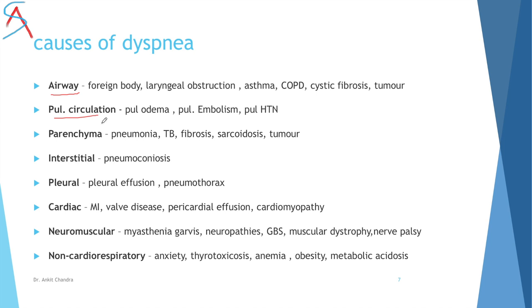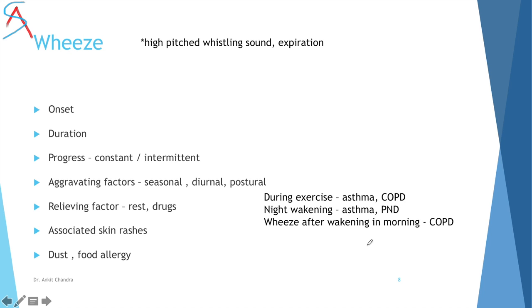Causes of dyspnea include airway causes such as obstruction and COPD; pulmonary circulation causes like pulmonary embolism and pulmonary hypertension; and parenchymal causes like pneumonia, TB, fibrosis, and sarcoidosis. Next, ask about wheeze — a high-pitched whistling sound produced during expiration as air passes through small airways.